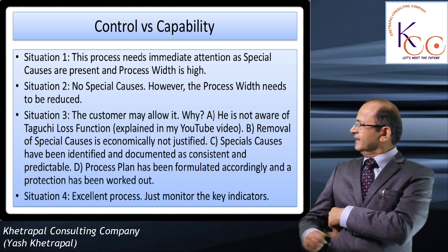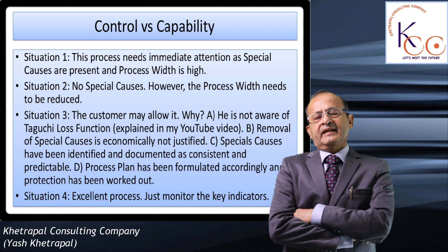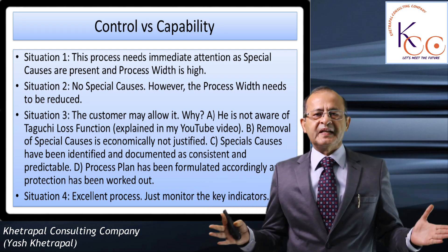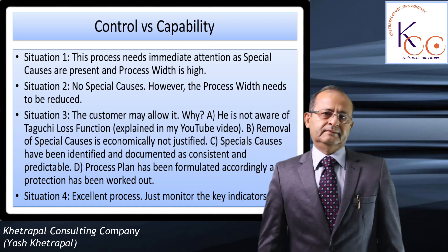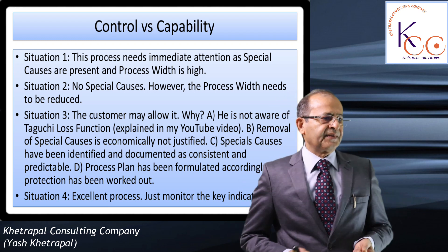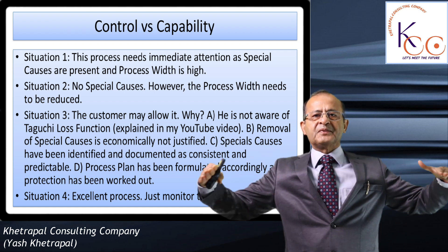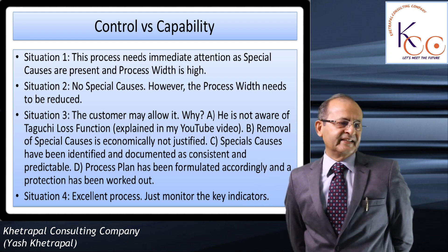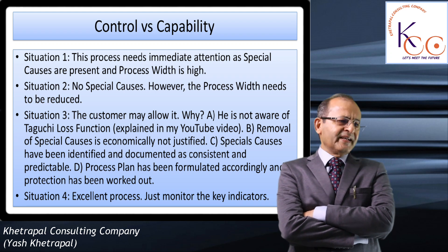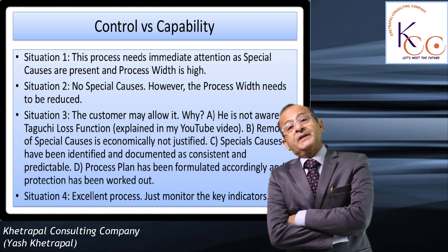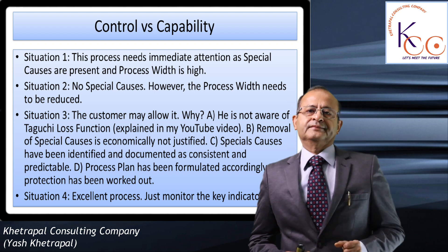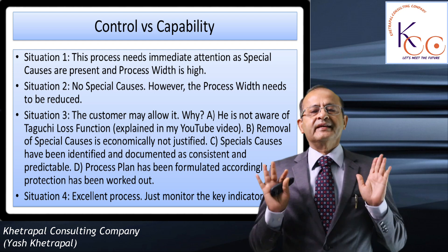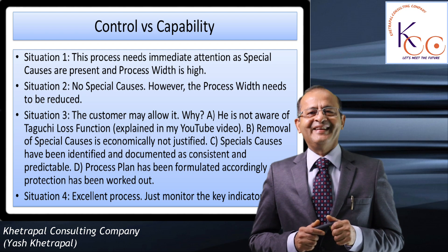Looking at the PPT slide: Stage 1 needs immediate attention — it is neither capable nor under control, capability level Cp is low, and overall process width is high. Stage 2 has no special causes but overall process width is high, so the process will produce some rejection. Stage 3 — the customer is allowing it; however, measuring only against control limits is called 'goal post mentality.'